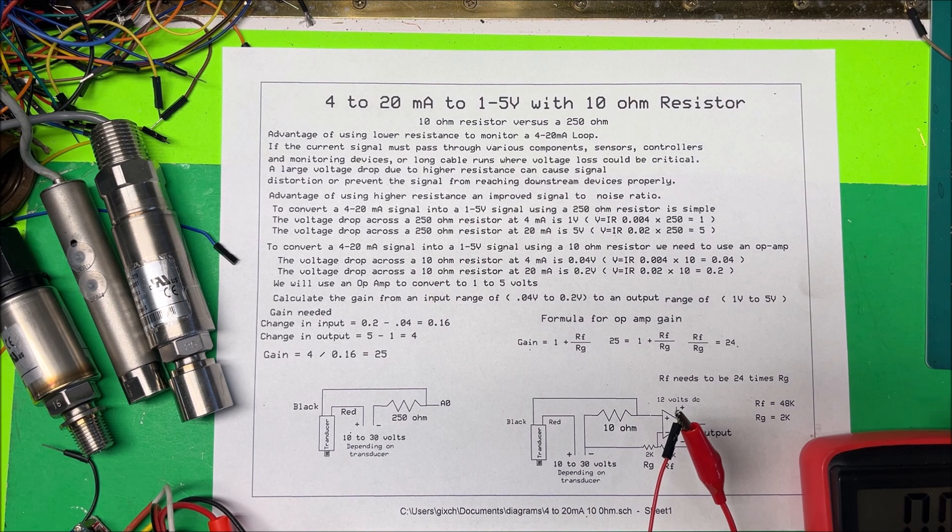Let's take a look at a 4 to 20 milliamp loop and we're going to convert that to 1 to 5 volts. We're going to do it with a 10 ohm resistor. Now the easiest thing to do is use a 250 ohm resistor.